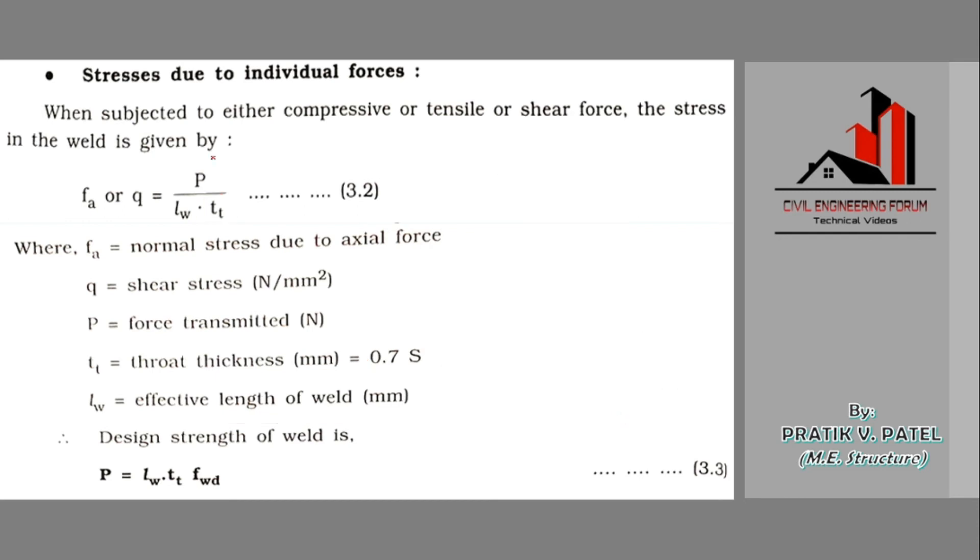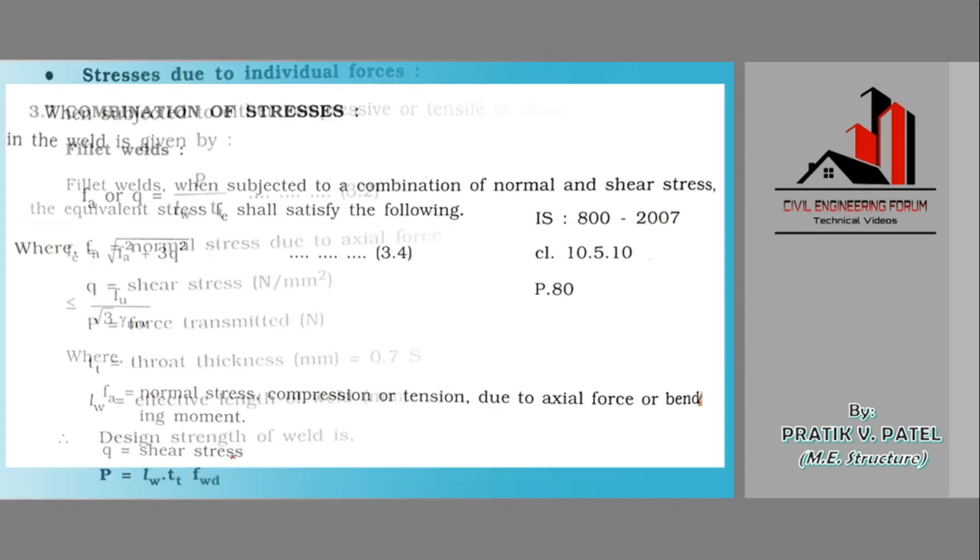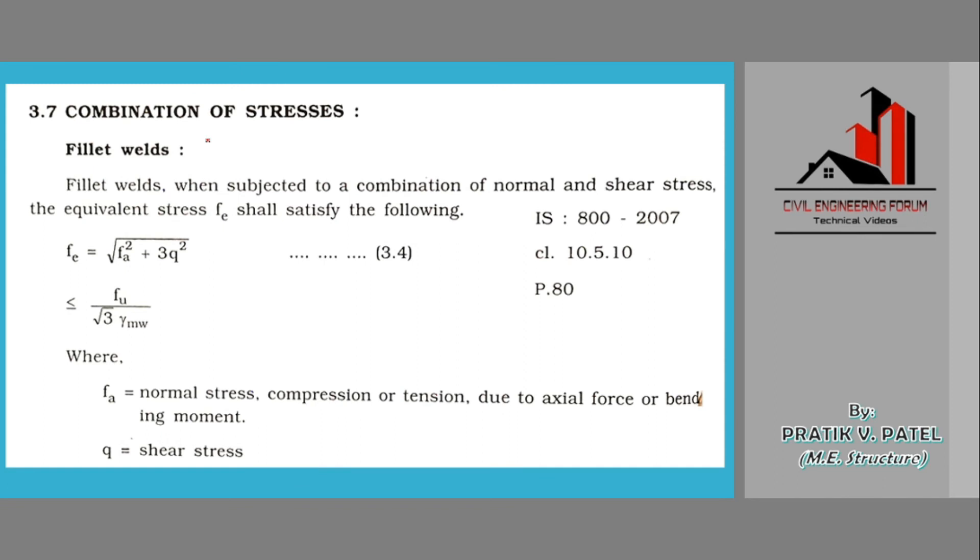Now we can have an idea on what is the design strength of the weld in case of external loading. If we are having an external load, then the design strength would be fwd, and we can make P subject and these all things will go to this side. So P is equal to lw into throat thickness into design strength of weld.